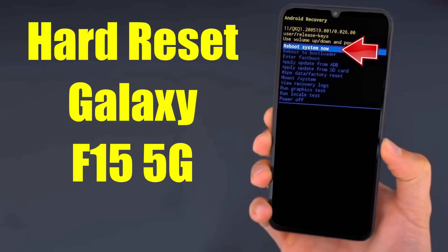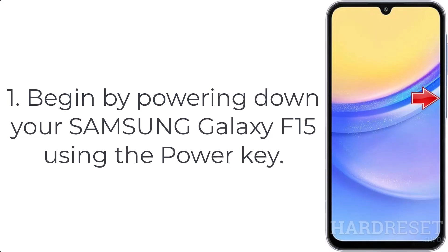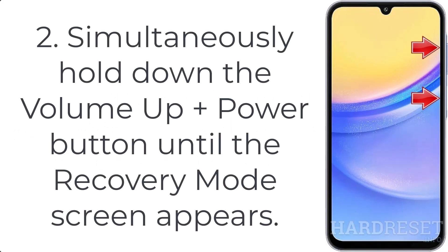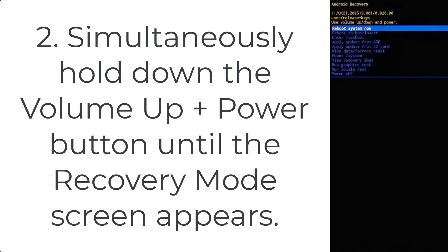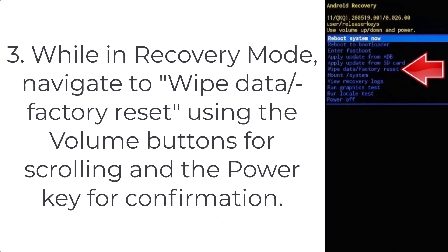How to hard reset Galaxy F15 5G. Step 1: begin by powering down your Samsung Galaxy F15 using the power key. Step 2: simultaneously hold down the volume up plus power button until the recovery mode screen appears.